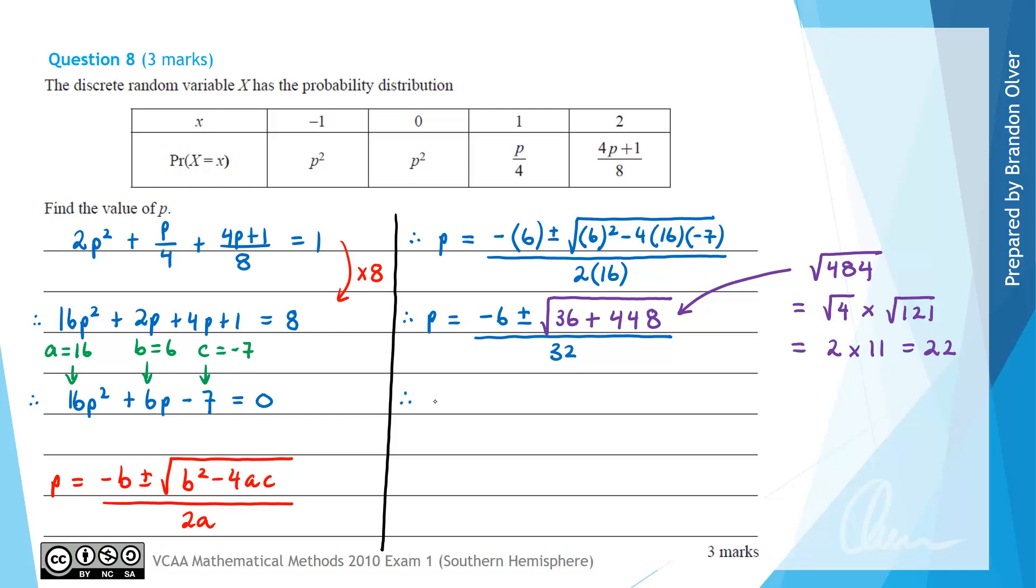So therefore when we're solving for p, we will get p equals minus 6 plus or minus, and now instead of the square root of a number we just have 22, all divided by 32. So this will give us two options. The first is that p equals minus 6 minus 22, which is minus 28 on 32. And the second option is that p equals minus 6 plus 22, which is positive 16 on 32.